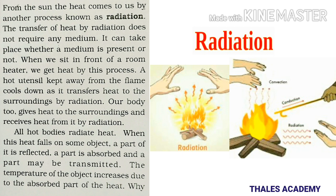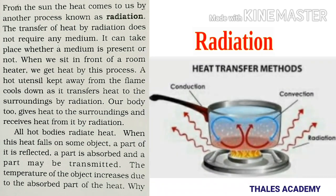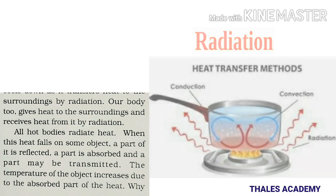A hot utensil kept away from the flame cools down as it transfers heat to the surroundings by radiation. Our body too gives heat to the surroundings and receives heat from it by radiation. All hot bodies radiate heat. When this heat falls on some object, a part of it is reflected, a part is absorbed, and a part may be transmitted. The temperature of the object increases due to the absorbed part of the heat.